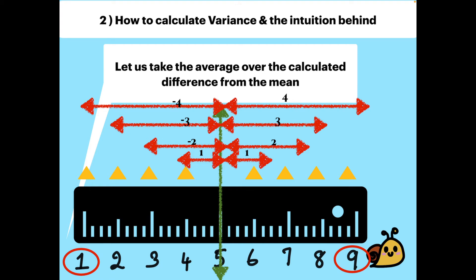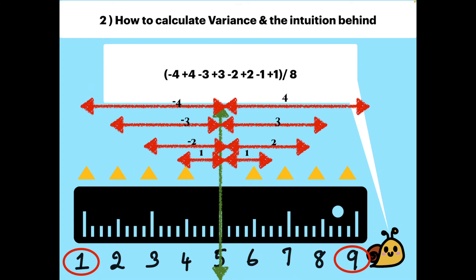And we have to average all these calculated differences from the mean. That is adding all of the values up and dividing by the count is our average. That is minus 1 plus 4 minus 3 plus 3 minus 2 plus 2 minus 1 and plus 1, divided by total count is 8.